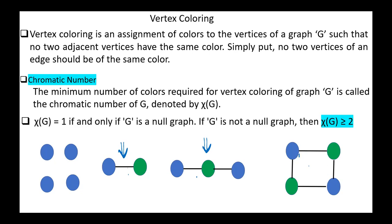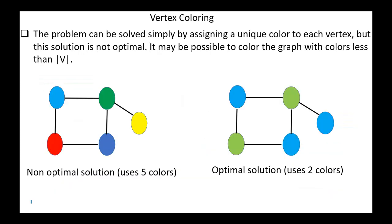In this regular graph, we also need only two colors: blue, green, blue, green. The problem can be solved by assigning a unique color to each vertex, but this solution is not optimal. It may be possible to color the graph with fewer colors than the number of vertices. For example, in this graph we can assign each vertex a unique color, giving Chi of G equals five, but this solution is not optimal.